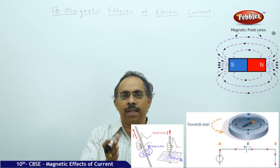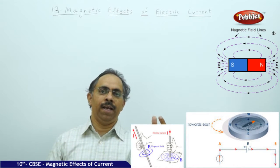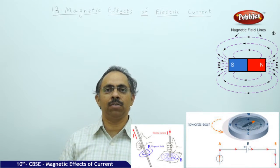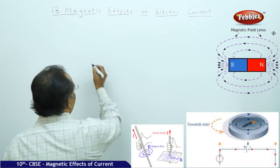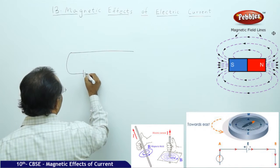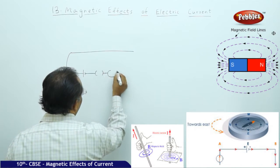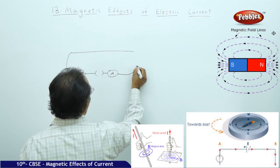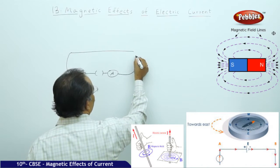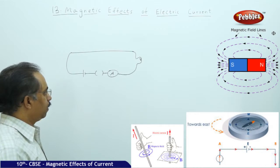The region surrounding a bar magnet where a compass deflects is called the magnetic field region. We can apply the same concept to check whether a current-carrying conductor has a magnetic field associated with it. If I have a wire connected to a battery, a plug key, an ammeter, and a bulb — when I switch it on, the ammeter shows a reading and the bulb glows.